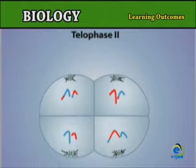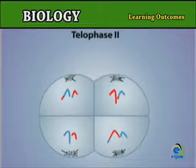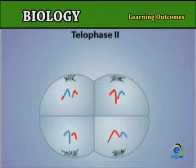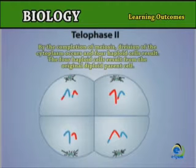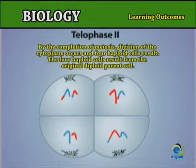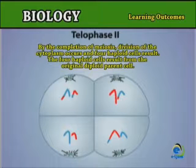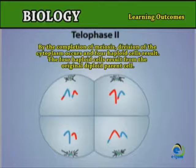During telophase II, the spindle disappears and the chromosomes become thread-like. New nucleoli and nuclear envelopes form. By the completion of meiosis, division of the cytoplasm occurs and four haploid cells result from the original diploid parent cell.